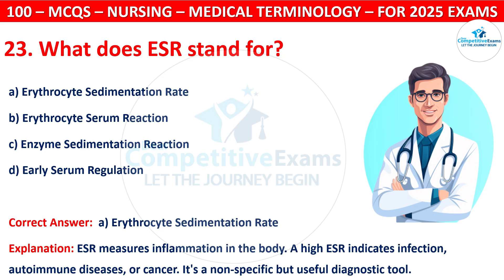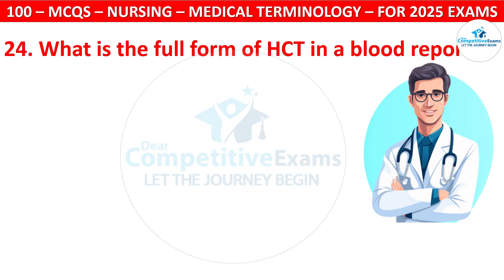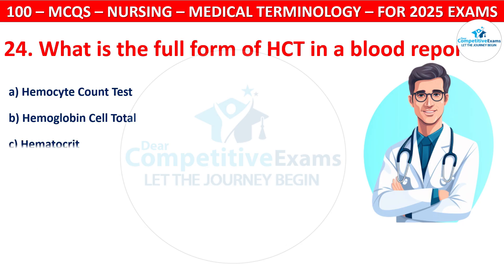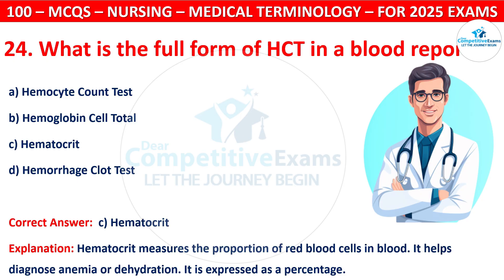Question 24: What is the full form of HCT in a blood report? Options are: Hemoxite Count Test, Hemoglobin Cell Total, Hematocrit, or Hemorrhage Clot Test. The correct answer is C, that is Hematocrit — the proportion of red blood cells in the blood. It helps diagnose anemia or dehydration. It is expressed as a percentage.